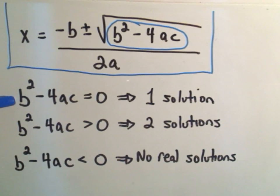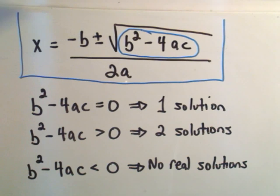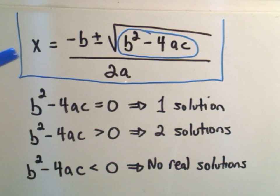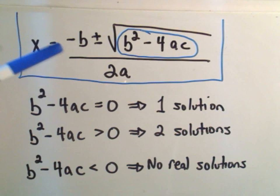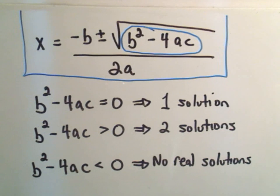And think about it, if it equals zero, what's going to happen? Well, the stuff underneath the square root is going to be zero, so the square root is just going to disappear, because the square root of zero is zero, and we'll just be left with negative b over 2a. And that will be your solution.